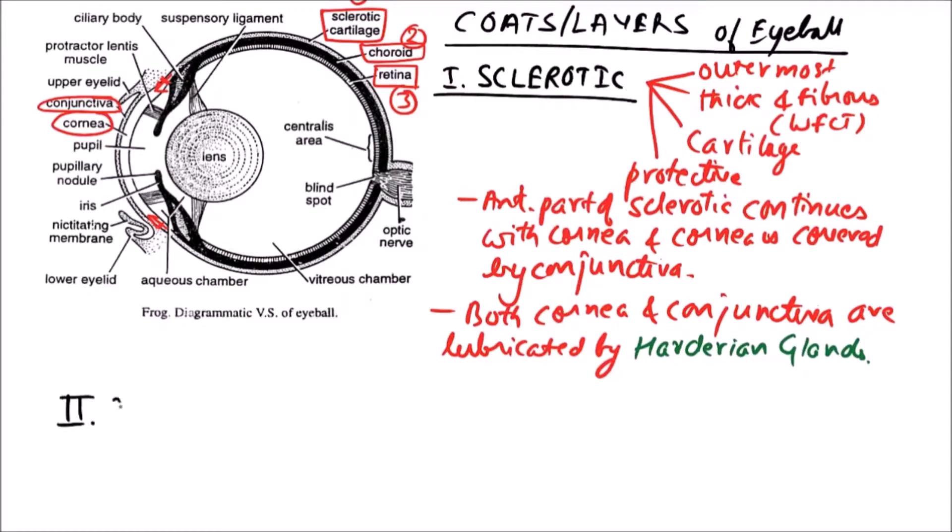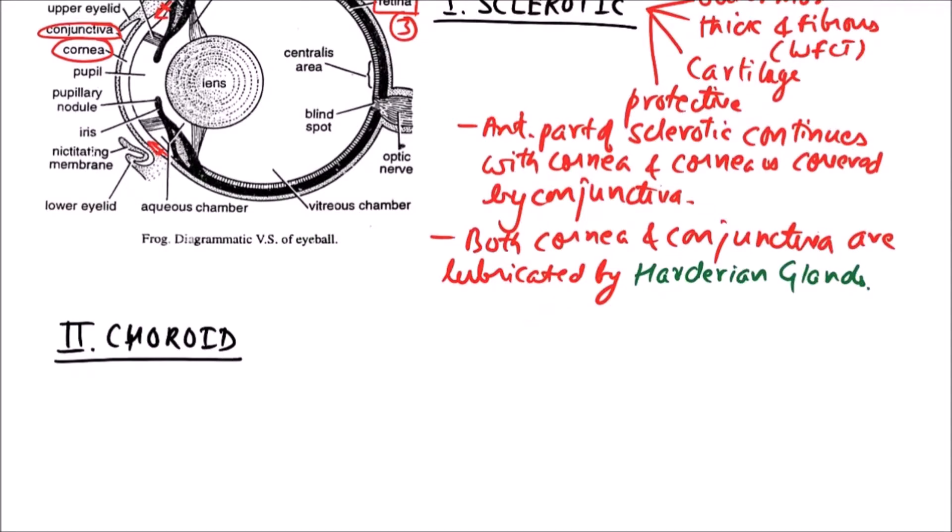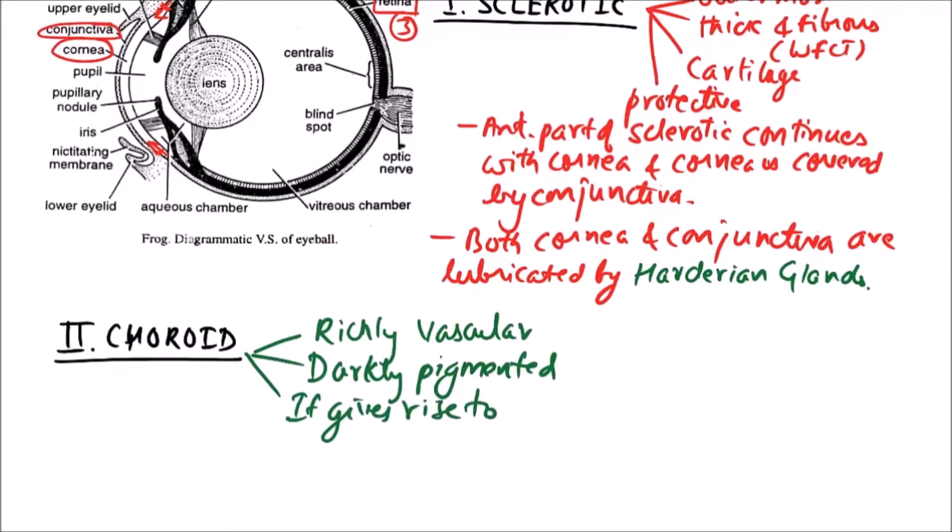The second layer is choroid. Now, some important points about the choroid are: it is richly vascular, it is darkly pigmented, and it gives rise to iris and ciliary body.